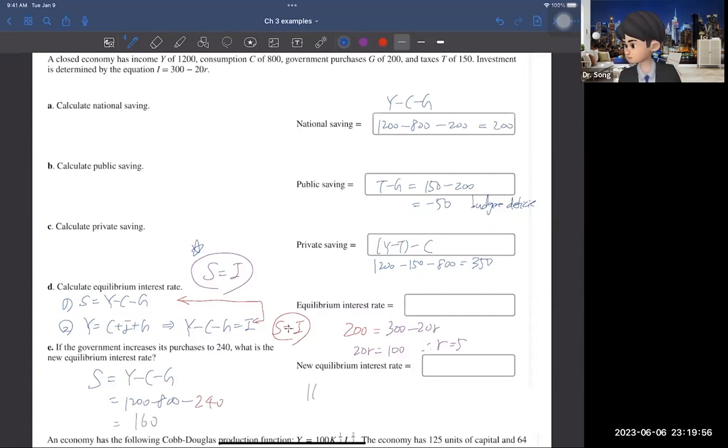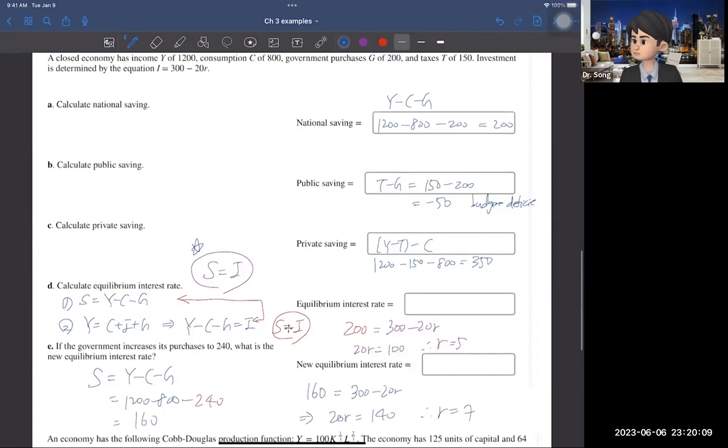So, then, it's the same question. The saving equals investment, but numbers are changed. Then, 20R equals 140. That means that R, the interest rate, is 7. So, that's the answer.